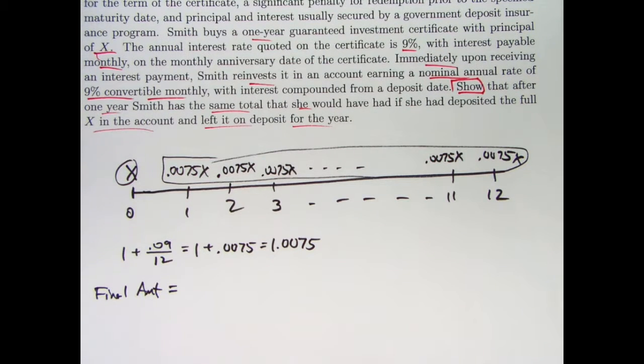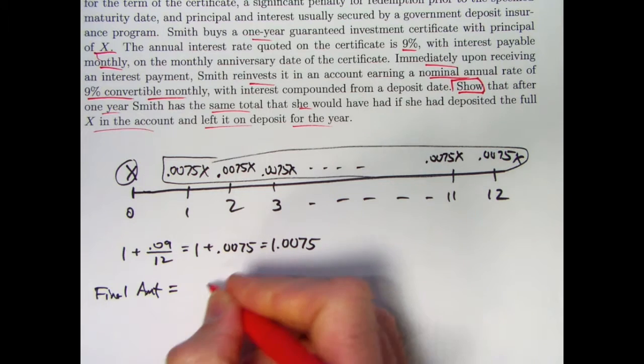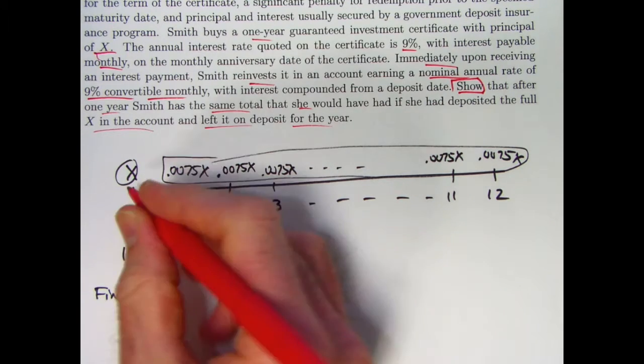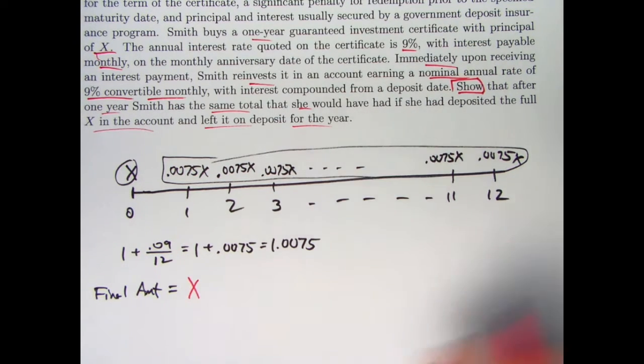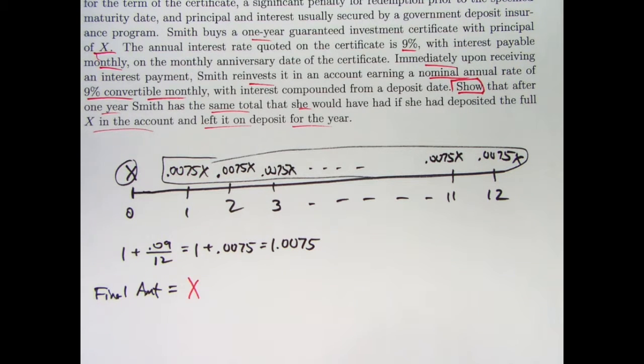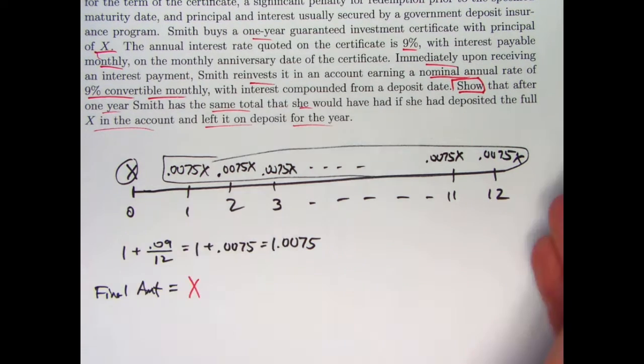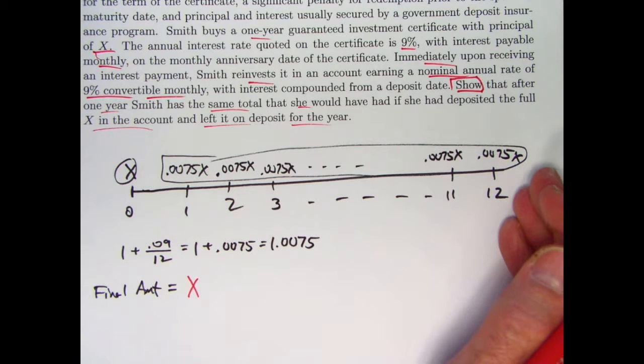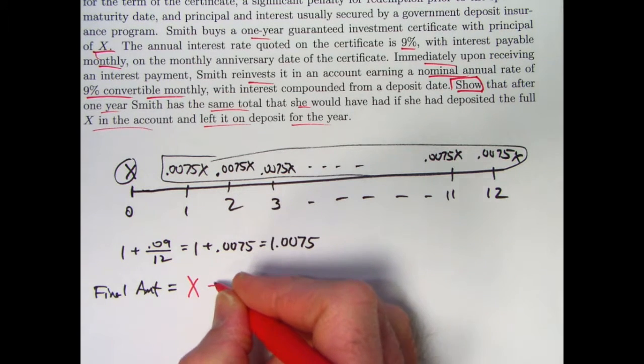This is kind of an odd thing to do. We are trying to demonstrate a principle that reinvestment at the same rate doesn't affect things. You've got the initial X that by the end is still just X. That did earn interest each month, but since we took the interest out of the account, we're going to ignore the fact that it gained and think of that as X at time 12 as well.